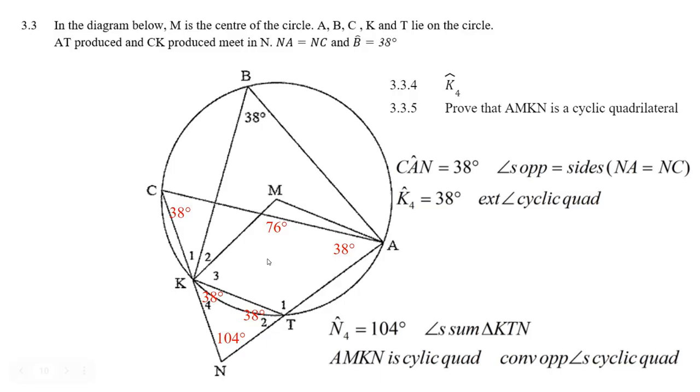And then we can say it must be a cyclic quad, because of the converse of opposite angles in a cyclic quad. They add up to 180. And there we're all done.